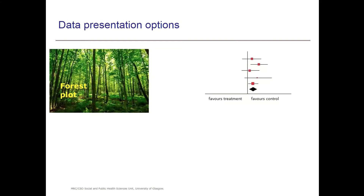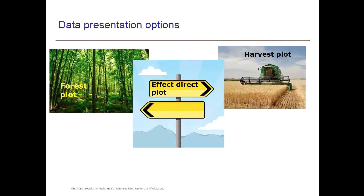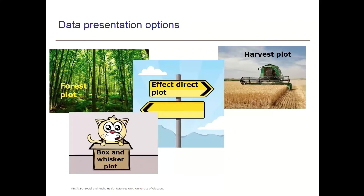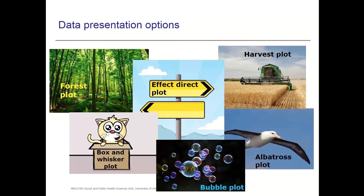Most people would be very familiar with the forest plot, although when you first encounter it, it might take you some time to get your head around it. But other options include, as we've already discussed, the effect direction plot, the harvest plot, a box-and-whisker plot if you're presenting a summary of effect estimates, a bubble plot, and there's another one developed by Julian Higgins called the albatross plot if you're relying on p-values. So there are lots of different options here.